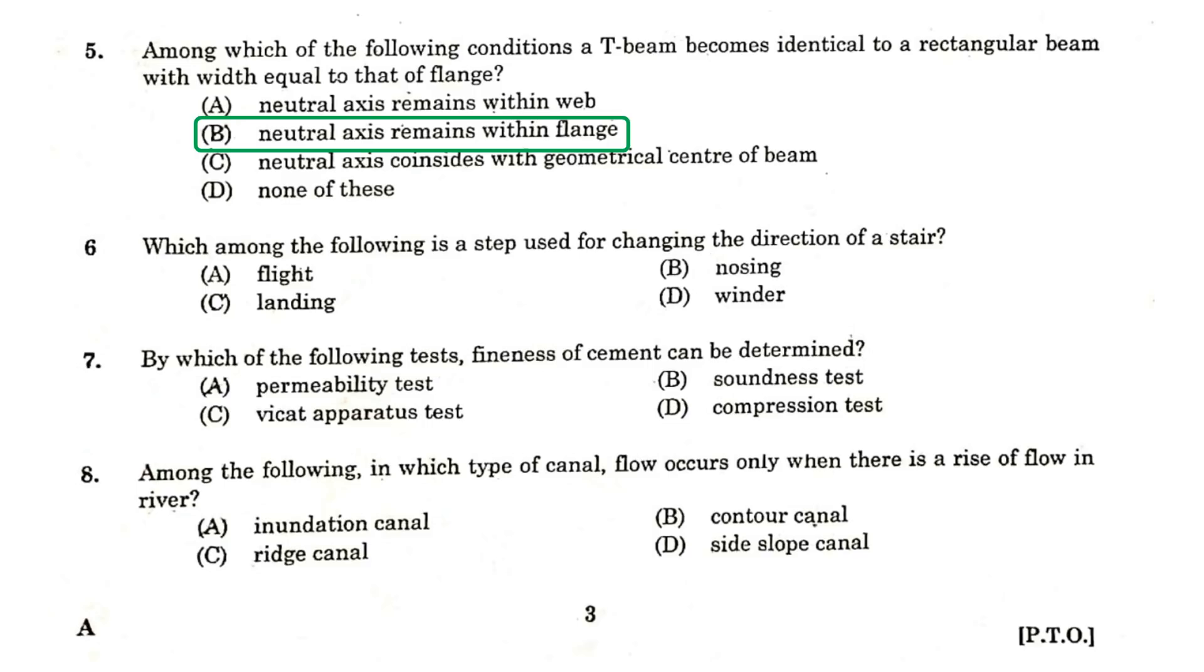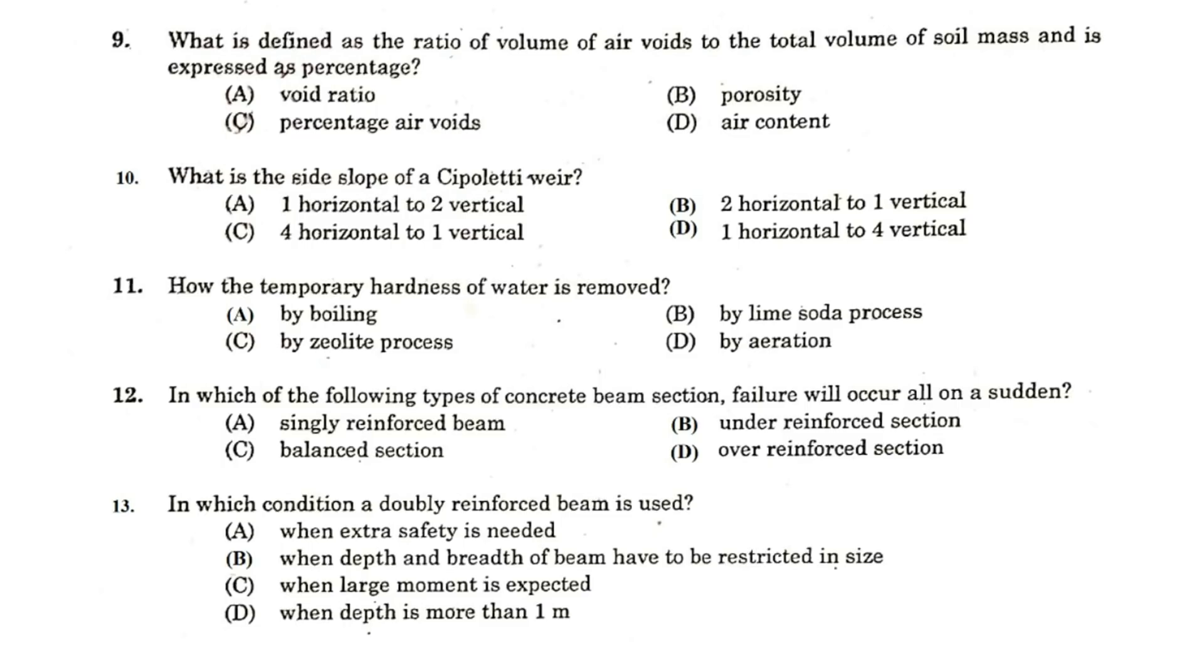Which among the following is a step used for changing the direction of a stair? Winders. By which of the following tests fineness of the cement can be determined? Permeability test. Among the following in which type of canal flow occurs only when there is a rise of flow in river? Inundation Canal. What is defined as the ratio of volume of air void to the total volume of soil mass and is expressed in % of air voids? What is the side slope of a Cipolletti weir? One horizontal to four vertical.